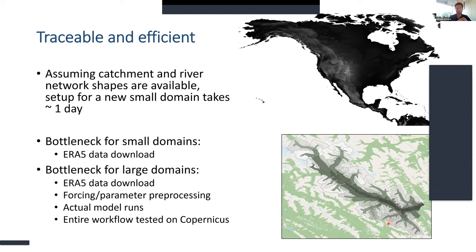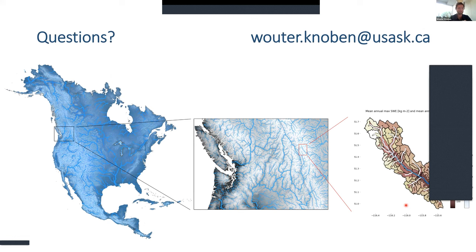The work is really traceable and efficient — we're now at the stage where setting up a new SUMMA plus MizuRoute instantiation, for example for the Bow Band, takes about 24 hours, which is a lot faster than before. Data downloads and processing are bottlenecks, but these are things you have to go through anyway, and with workflows like this there's less time spent creating code. We're currently crash-testing this across all of North America — about half a million modeling elements. If you want to try this, feel free to get in touch.